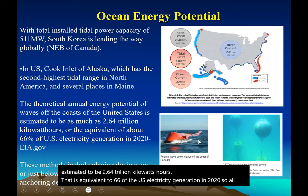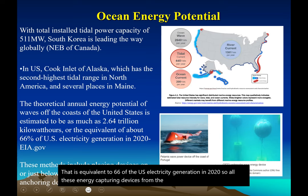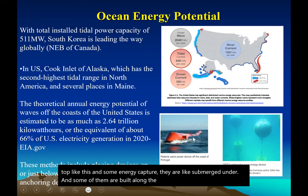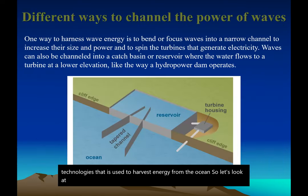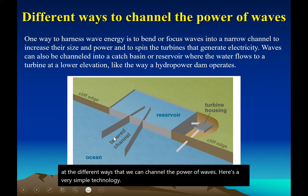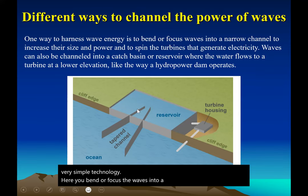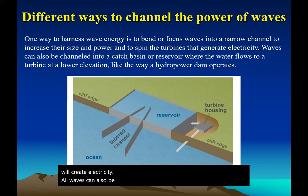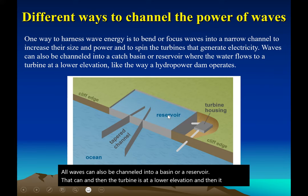All these energy-capturing devices from the ocean differ in design — some are like a buoy on top, some capture energy while submerged underwater, and some are built along the shoreline. There's a range of technologies used to harvest energy from the ocean. One simple approach is to bend or focus waves into a narrow channel, increasing their strength, which then spins turbines to create electricity. Waves can also be channeled into a basin; the turbine is at a lower elevation and the flowing water spins it to make electricity.